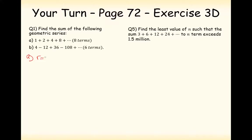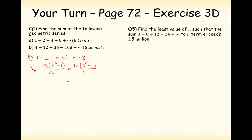For part a: r is 2, a is 1, n is 8. The formula for a geometric series is Sn equals a times (r to the n minus 1) over (r minus 1). So it's going to be 1 times (2 to the 8 minus 1) over 1, which gives 2 to the power of 8 minus 1, and we get 255.